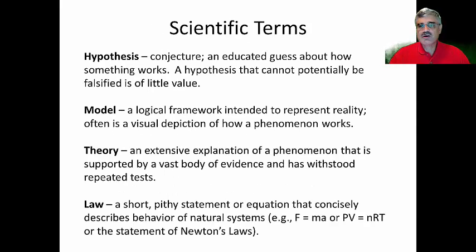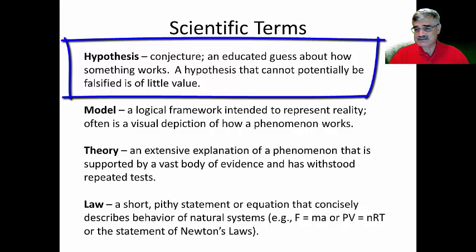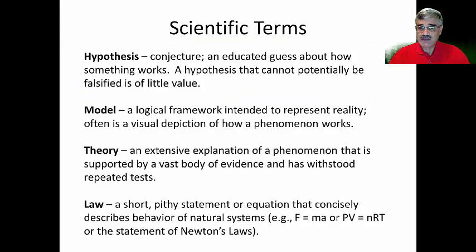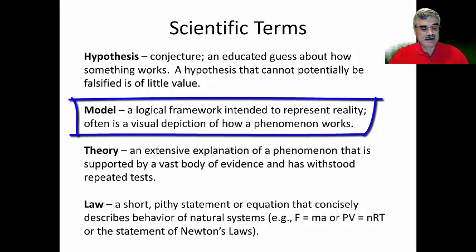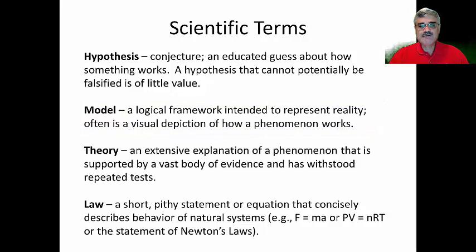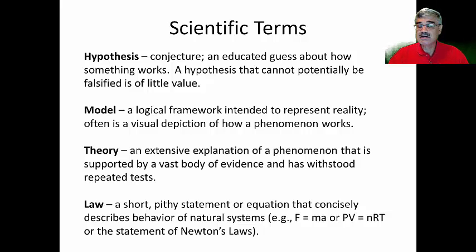In this slide, I show four important terms used with respect to the scientific method: hypothesis, model, theory, and law. These may seem like they overlap or mean the same thing, but actually they have distinct meanings. A hypothesis is a conjecture, an educated guess about how something works, and hypotheses are what we test in order to further understand the basis for a process. When a scientist achieves some level of understanding of a natural process, he or she may develop a model — a visual depiction of how phenomena works or some logical framework, almost like a cartoon or drawing of how something operates. If a model is supported by studies by other scientists and withstands many challenges over time and can explain a wide variety of observations, it might eventually become what is called a theory.